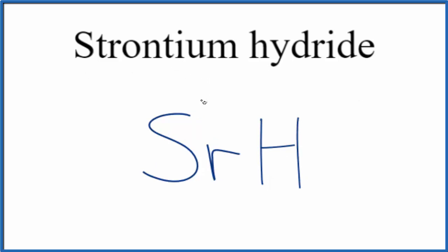So strontium on the periodic table has a 2 plus ionic charge because it's in group 2. In hydrogen, we're used to hydrogen having a 1 plus ionic charge, but that wouldn't make sense.